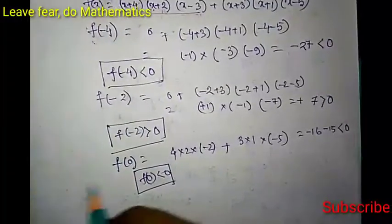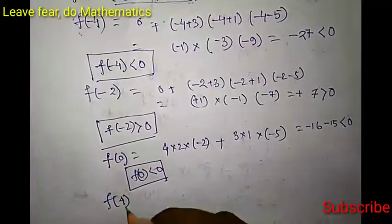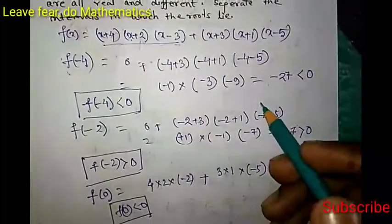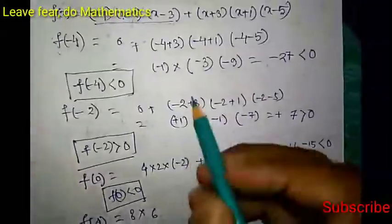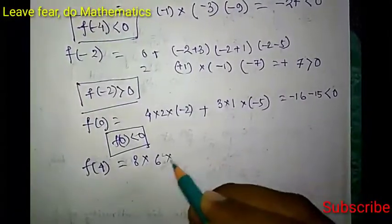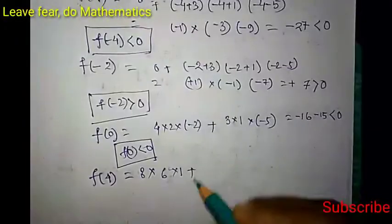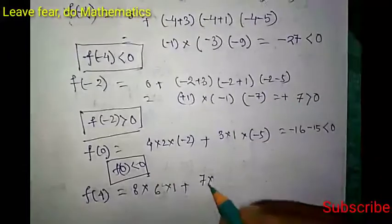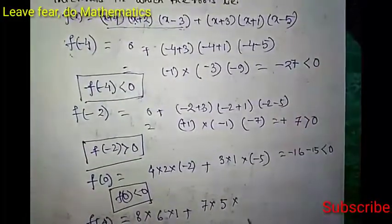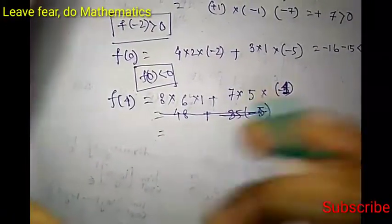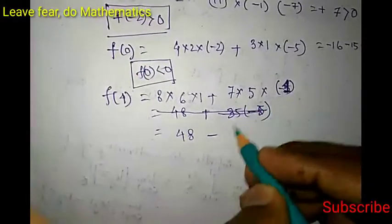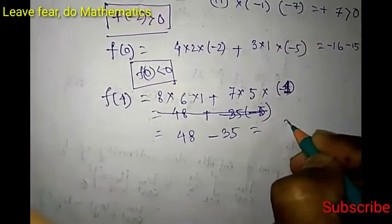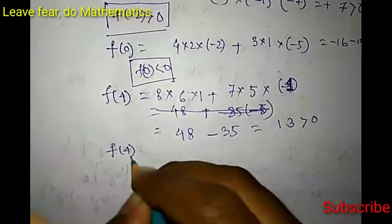Now let us calculate f(4). Putting x = 4: the first part gives (4+4)(4+2)(4-3) = 8 × 6 × 1 = 48. The second part gives (4+3)(4+1)(4-5) = 7 × 5 × (-1) = -35. So f(4) = 48 - 35 = 13 > 0.